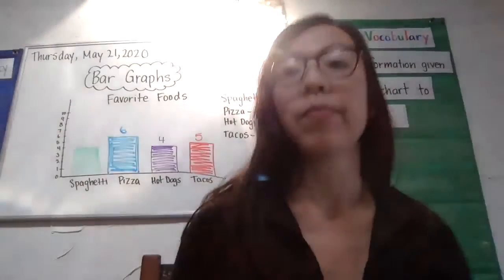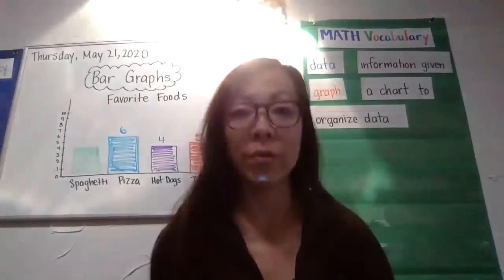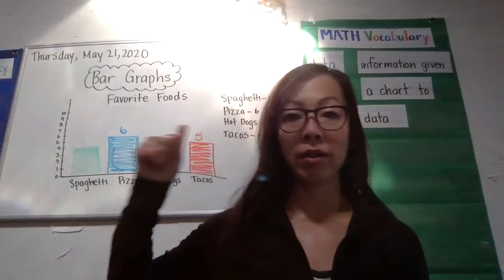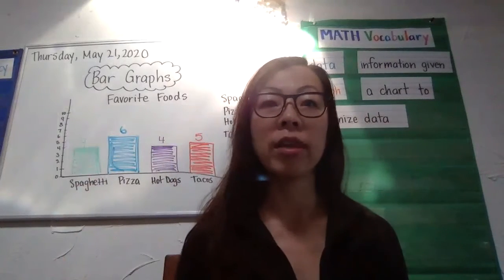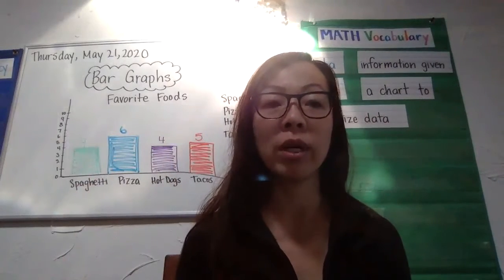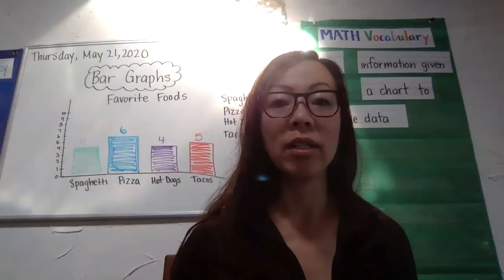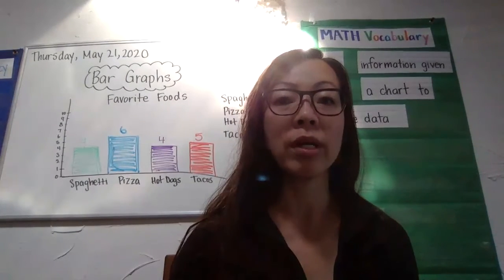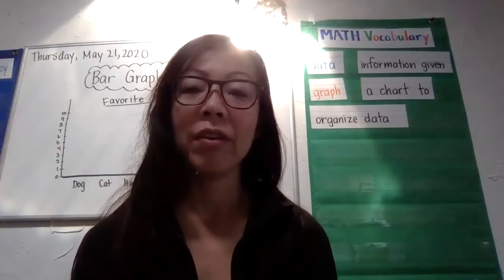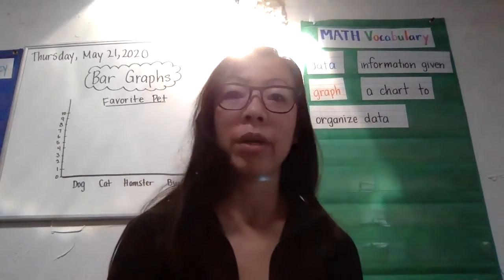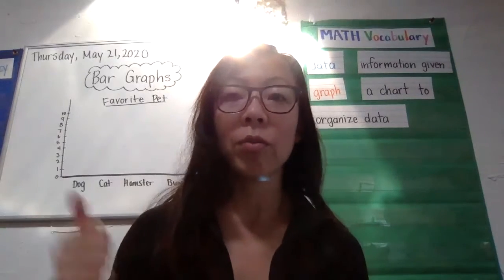And that's a bar chart. You see how we have information that's given to us — our data — and then we put it into a chart that helps us quickly see the information. Let's look at one more example. Let's make a bar graph about our favorite pets.